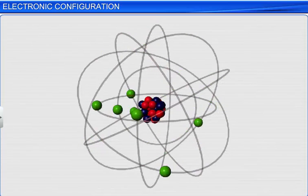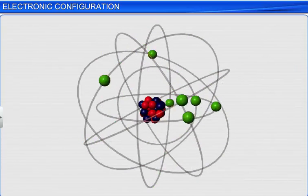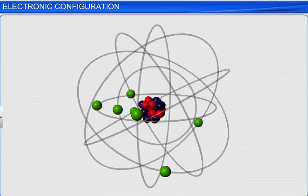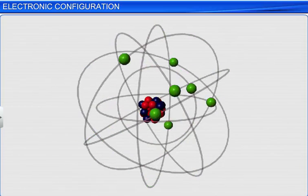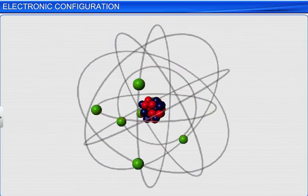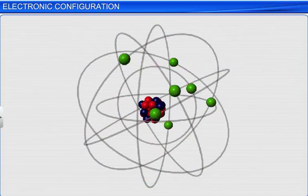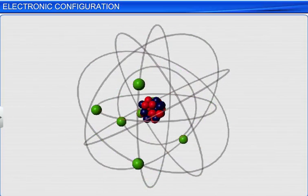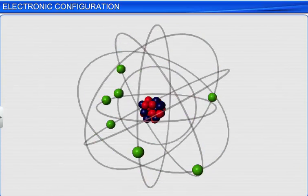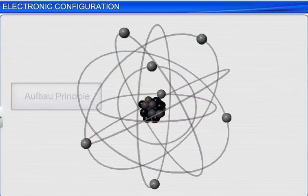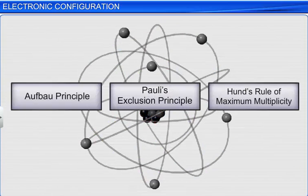We can define electronic configuration as the distribution of electrons into various orbitals of an atom. Before we begin to understand the electronic configuration of atoms, let's recap the three main principles that guide the filling of electrons into various orbitals in an atom.